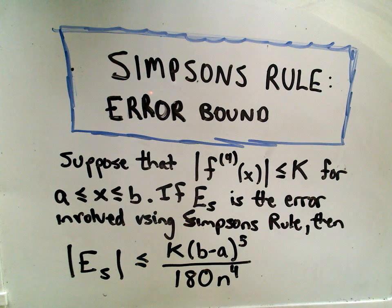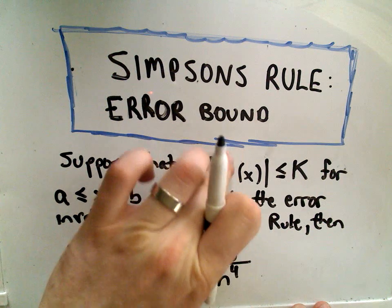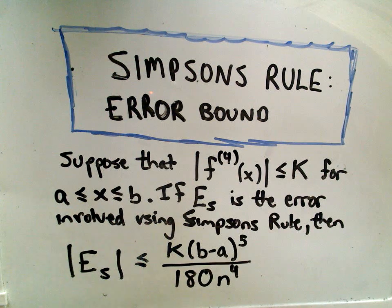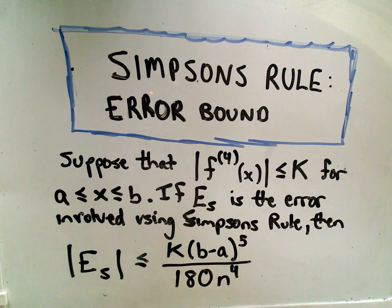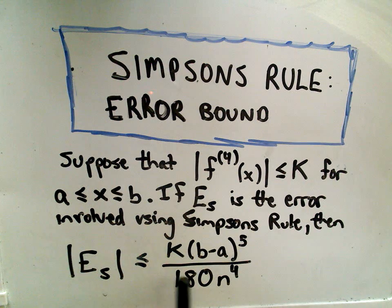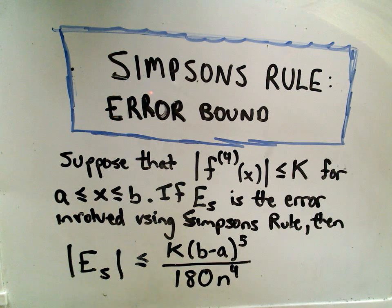In this video, I'm going to do Simpson's rule and talk about the error bound on Simpson's rule. What this says is, if you look at the fourth derivative of the function, and we can bound that above by some number k for x's in our given interval that we're integrating over, then we can say that the error involved in using Simpson's rule — the absolute value of that — is going to be bounded above by k times the length of the interval raised to the fifth power, divided by 180 times n to the fourth, where n is the number of intervals we use.